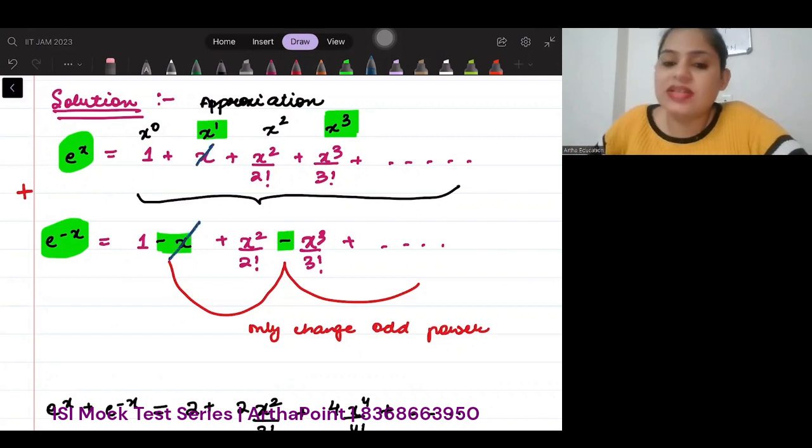Let's have a look here. So, x and minus x will cancel out. x to the power 3 by 3 factorial and minus x to the power 3 by 3 factorial will cancel out. So, all these odd power numbers are going to cancel out when I add this and this.